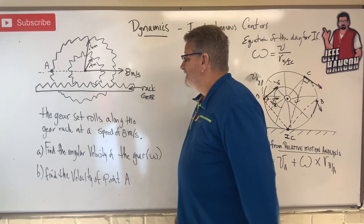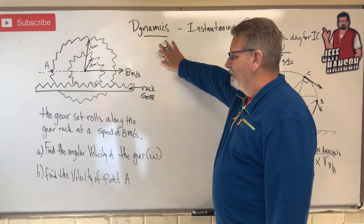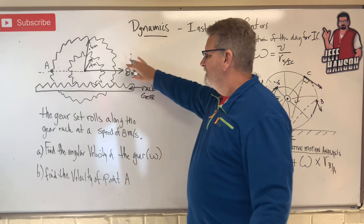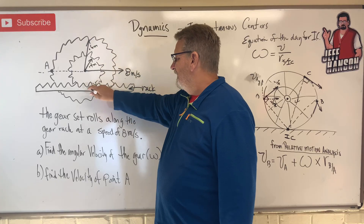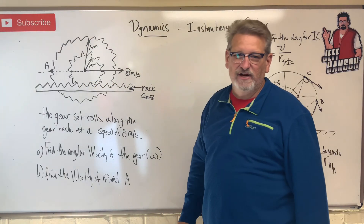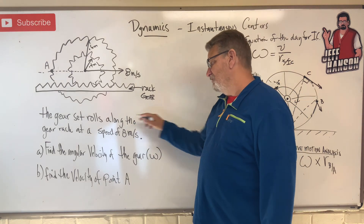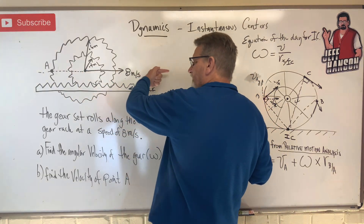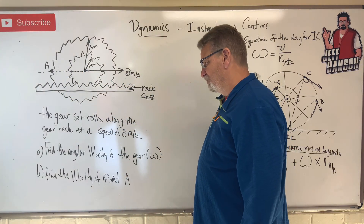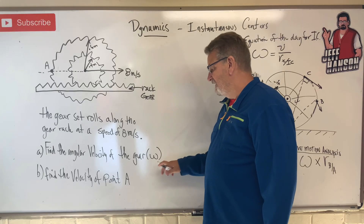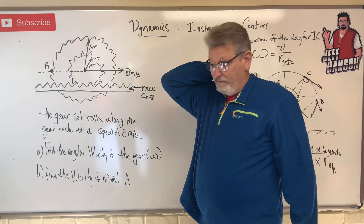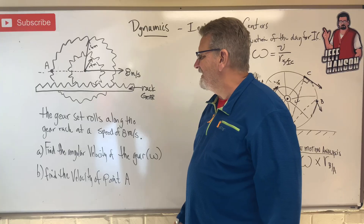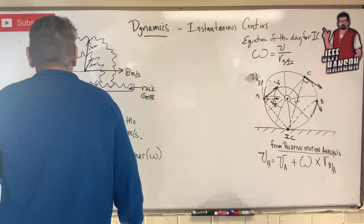It's a little confusing, I know. So let's apply it to this problem. Instead of a wheel we've got a gear - a little gear and a big gear - and they're in contact with a rack gear. It's like a rack and pinion gear. The gear rolls along the gear rack at a speed of eight meters per second. Find the angular velocity of the gear - that's omega - and then find the velocity of point A.